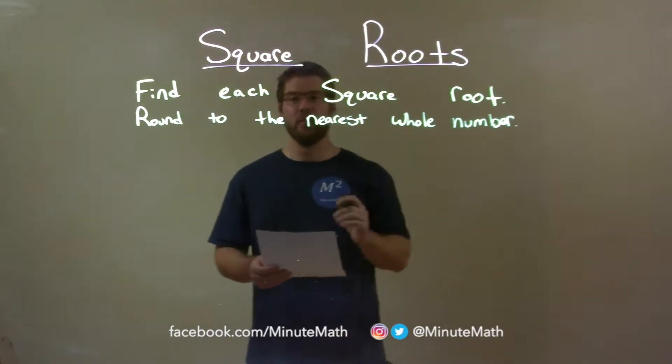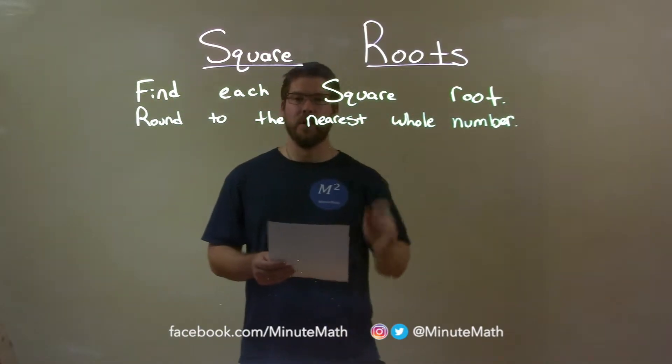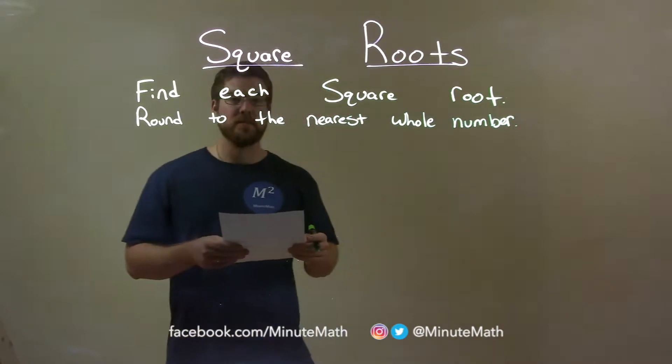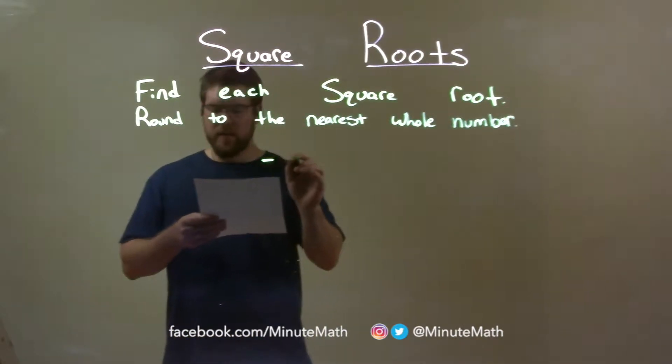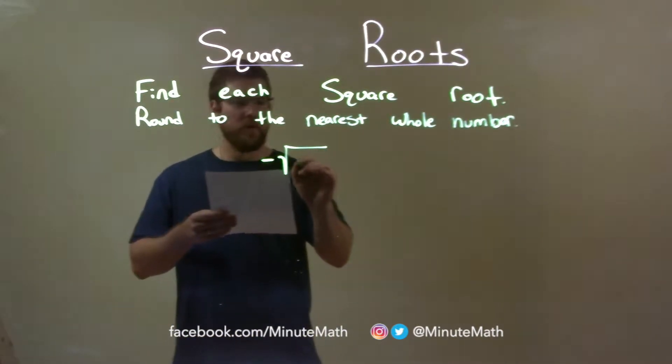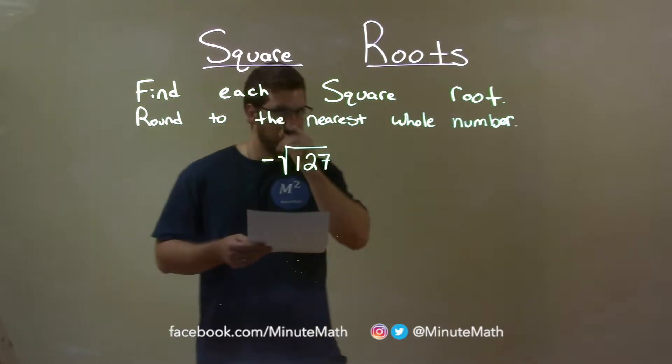We're going to find each square root and round to the nearest whole number. If I was given this problem, the negative square root of 127, okay?